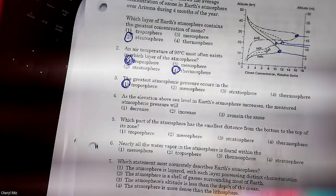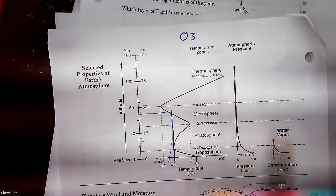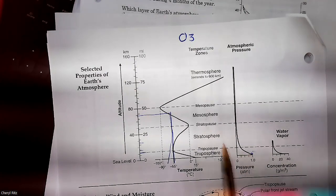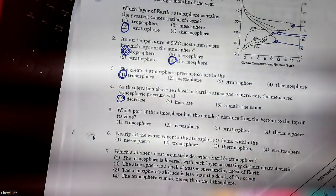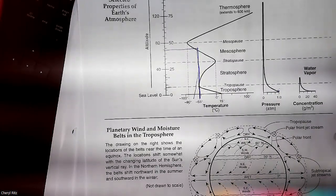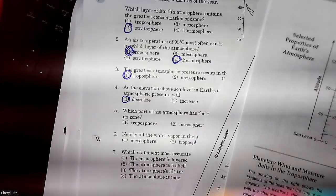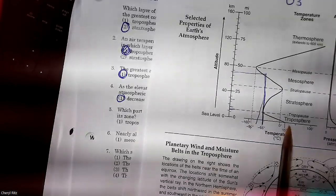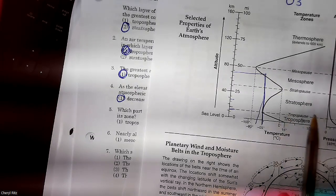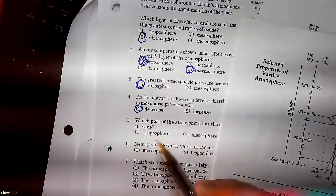As elevation above sea level in Earth's atmosphere increases, the measured pressure will decrease — it goes from 1 at the ground to 0 up in the sky. Which part of the atmosphere has the smallest distance from the bottom to the top? The troposphere — it's literally the skinniest layer. They used nice even scales so you can just see that. The answer is 1.